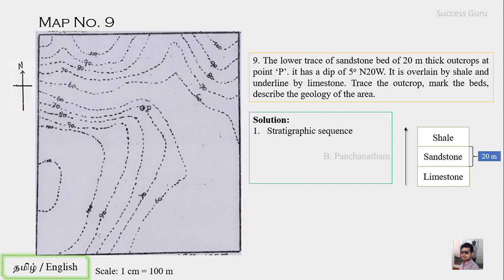Remember: when editing the sequence, we cannot find the thickness of the topmost and bottommost beds. For the topmost bed, we don't know how far it extends or how much has been removed by erosion. For the bottommost bed, if you move further down through the limestone there will be another formation starting, so we cannot determine the base. Technically, do not mention thickness for the top and bottom beds in the stratigraphic sequence.